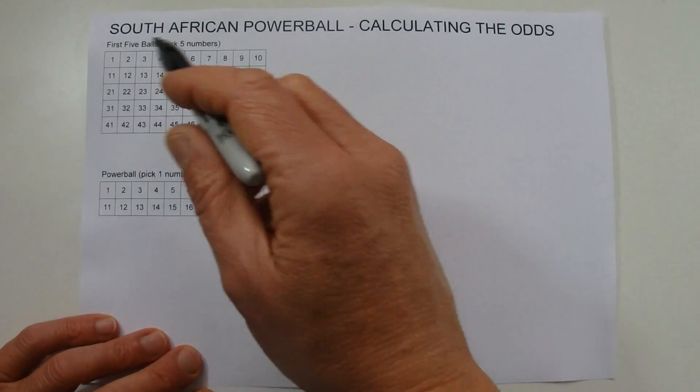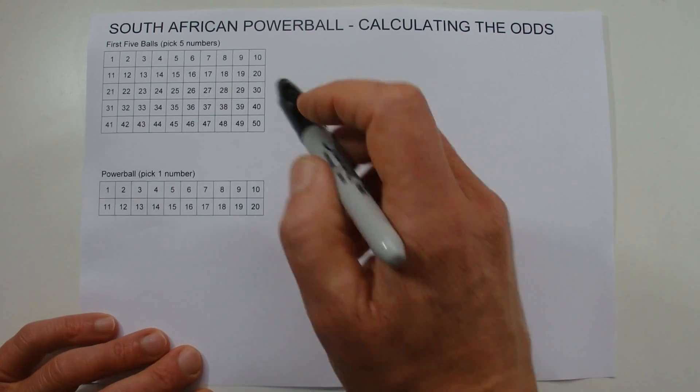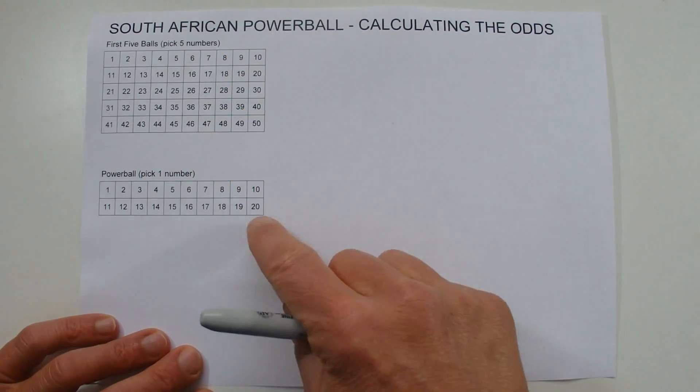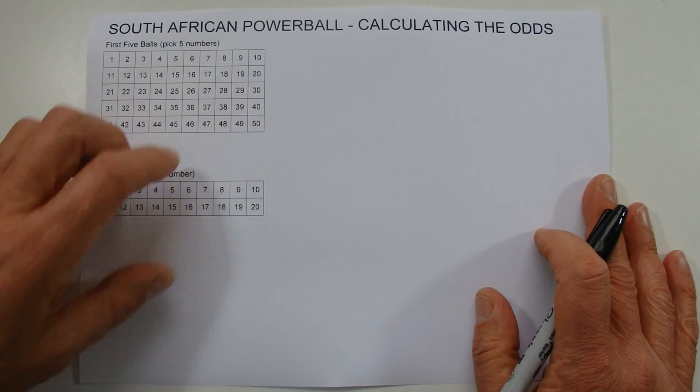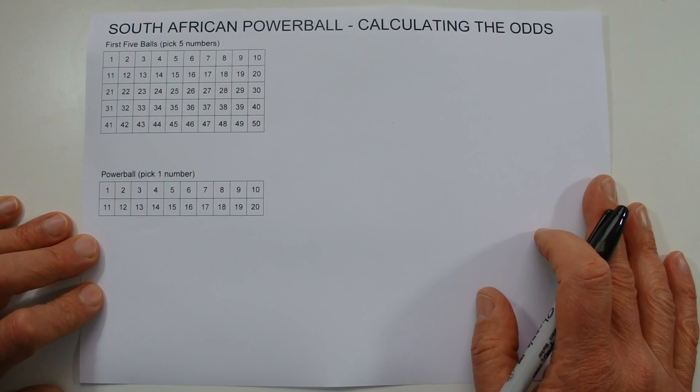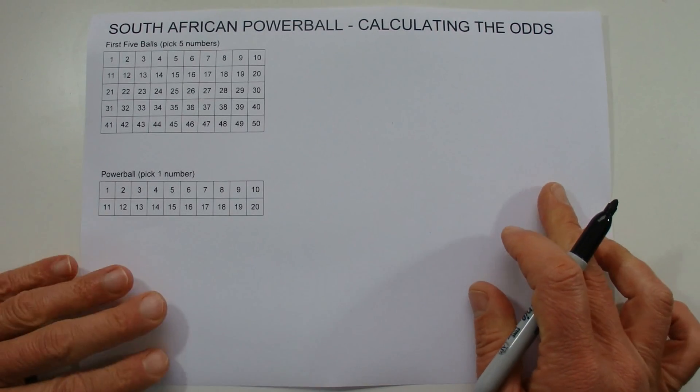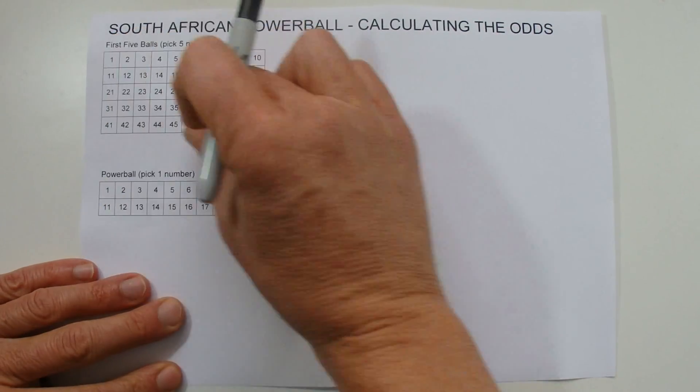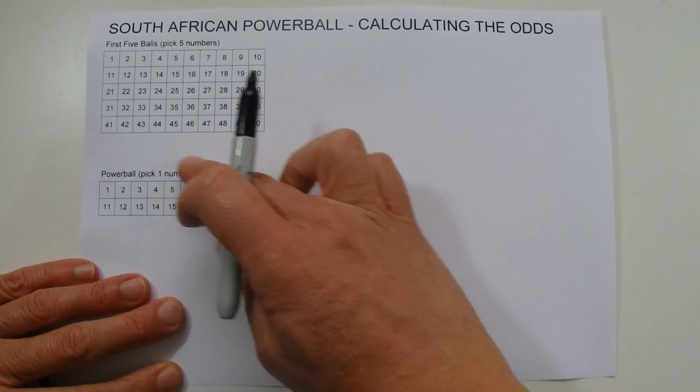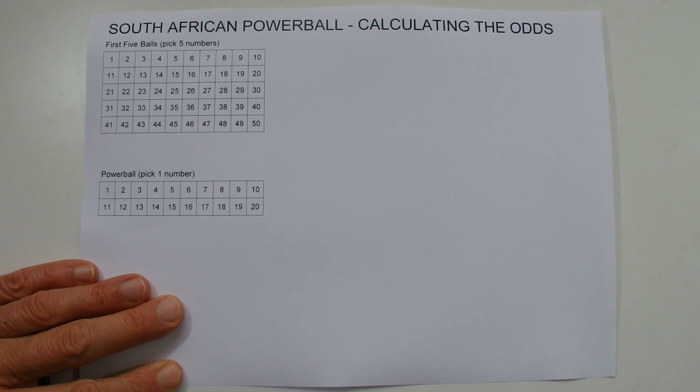What I'm going to do is randomly select five numbers from the top 50 and one number from the Powerball. Hopefully by doing it this way it will help you understand how the odds are calculated. I'm just going to pick five random numbers and pretend this is your Powerball coupon, and then pick one number from the Powerball down the bottom.